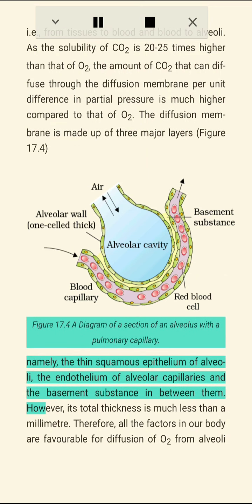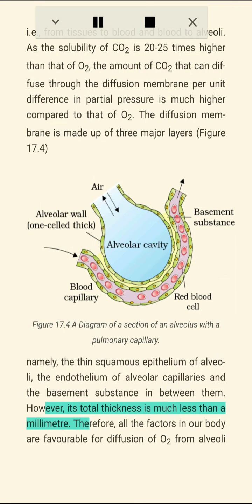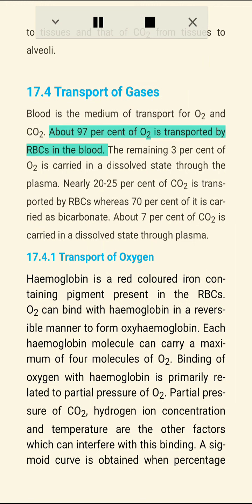The diffusion membrane consists of the thin squamous epithelium of alveoli, the endothelium of alveolar capillaries, and the basement substance in between, with a total thickness of much less than a millimeter. Therefore, all factors in our body are favorable for diffusion of O2 from alveoli to tissues and CO2 from tissues to alveoli.